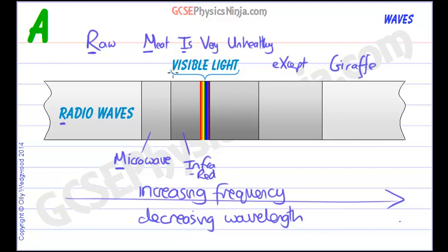Then we have visible light — that's V for 'very.' Visible light includes red, orange, yellow, green, blue, indigo, and violet — or ROYGBIV — the colours of the rainbow.